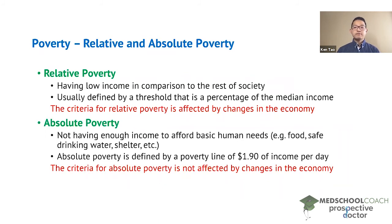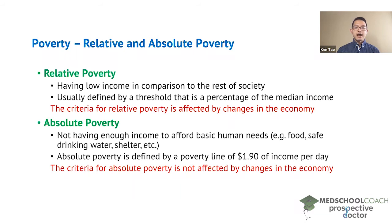This is defined by the United Nations as $1.90 of income per day. So that means individuals that have an income less than $1.90 per day are considered to be in what is called absolute poverty.